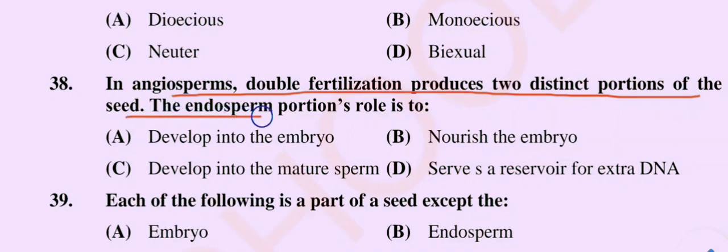Question number 38: In angiosperms, double fertilization produces two distinct portions of the seed. The endosperm portion's role is — option A develop into the embryo, option B nourish the embryo, option C develop into the mature sperm, option D serve as a reservoir for extra DNA. The correct option is option B: nourish the embryo.